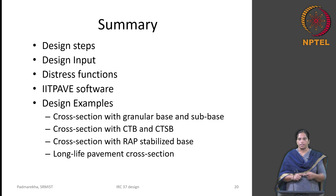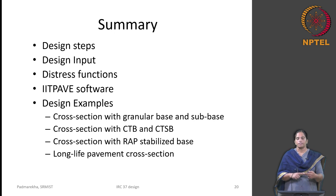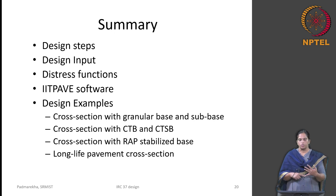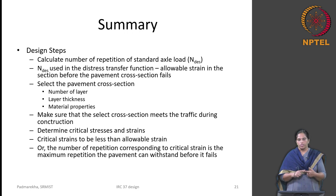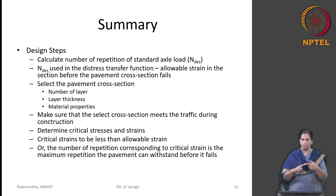To summarize the IRC pavement design process: we have seen different design steps, distress transfer functions for fatigue damage, rutting, and cement treated base distress, and demos on IIT PAVE software solving design examples with granular base, cement treated base, RAP stabilized base, and long life pavement cross sections. First, using traffic data, calculate the number of repetitions of a standard axial load — the N design value. This N design value is used in the distress transfer function to compute allowable strain, which is the maximum strain permissible for the given traffic.